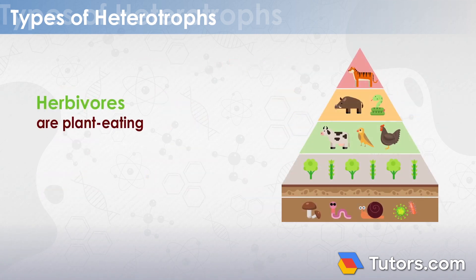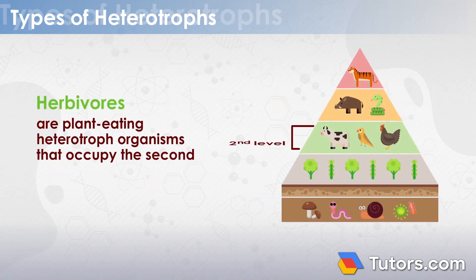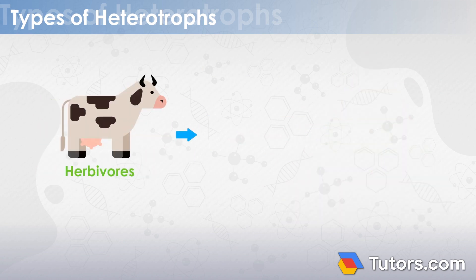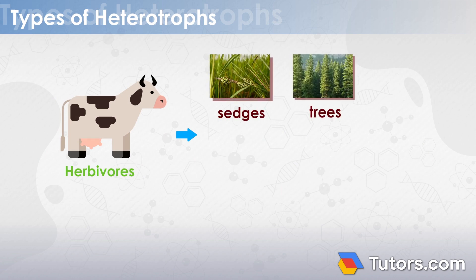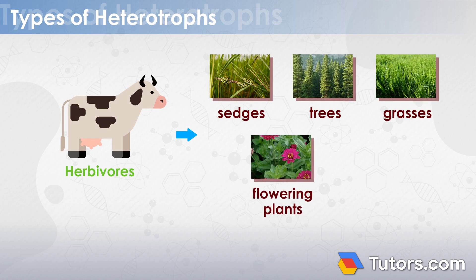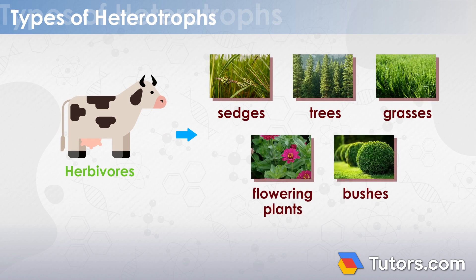Herbivores are plant-eating heterotrophic organisms that occupy the second tier of food chains. They feed on organic matter like living plants, such as sedges, trees, grasses, flowering plants, and bushes. Herbivores are known as primary consumers.